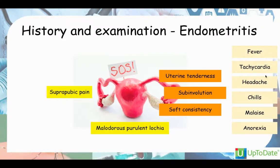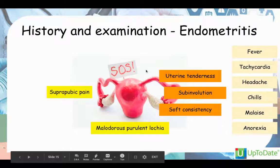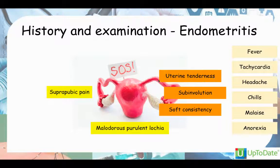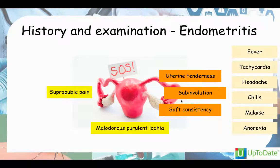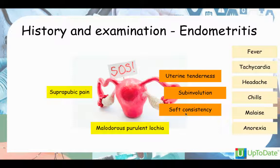Other than localized symptoms, ask about constitutional symptoms: fever, tachycardia, headache, chills, malaise, and anorexia. On examination, when you palpate the abdomen, you might elicit uterine tenderness because of endometritis. You may also find sub-involution — normally the uterus should involute to the point you can't palpate it by 10 days. If there are retained products of conception such as part of the placenta, you might have sub-involution. Also, normally the uterus should be firm in consistency, but with endometritis it might feel soft and boggy instead.